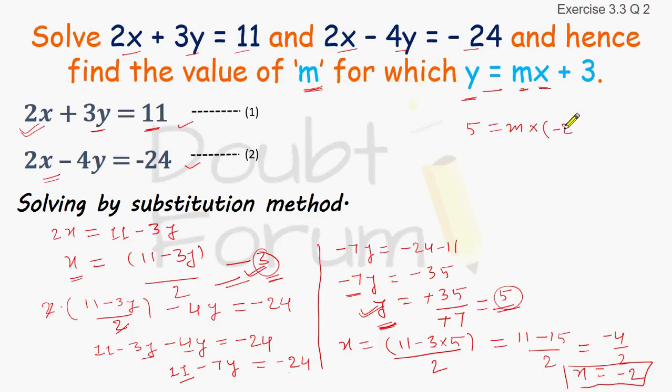We can replace x with minus 2, plus 3. So 5 equals minus 2m plus 3, or we can write it as minus 2m equals 5 minus 3, or minus 2m equals 2. So m equals 2 upon minus 2, which is minus 1. So the value of m which we get from this equation is minus 1.